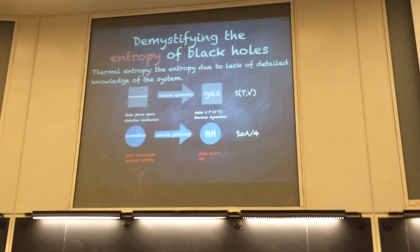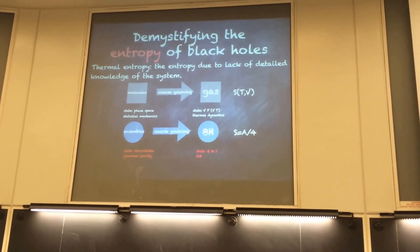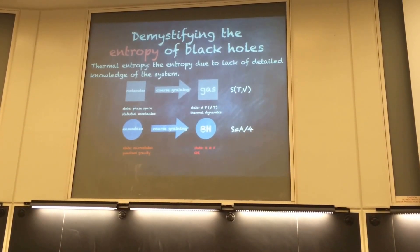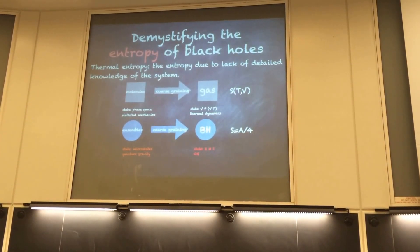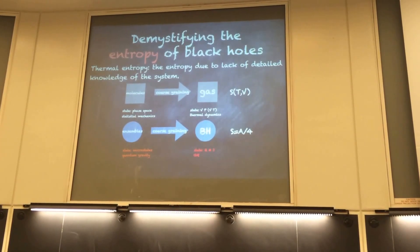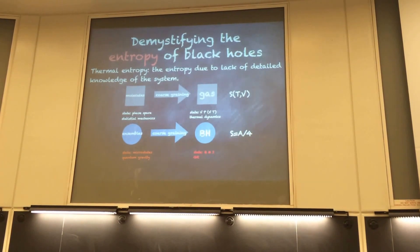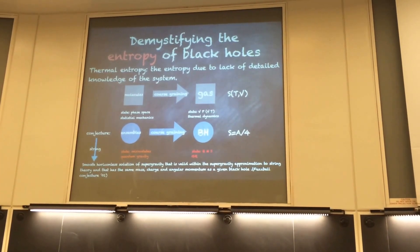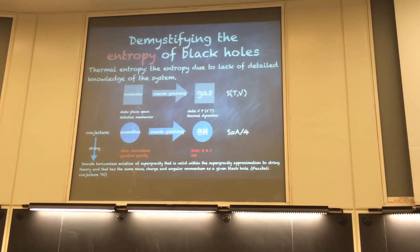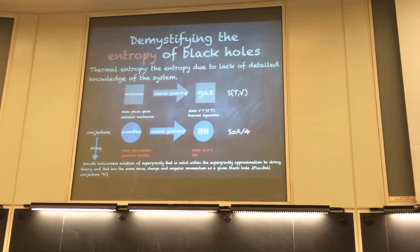Like the no-hair theorem: for black holes, we only have three parameters — the charge, the momentum, and the mass. But we guess — it's a conjecture — there are some ensemble of microstates of the black hole. When you look very far away, if you do the coarse-graining, you'll find this ensemble of microstates of the black hole. For different quantum gravity theories, we have different conjectures for what the ensembles are. In string theory, we have a conjecture called the fuzzball conjecture — we guess these ensembles are smooth solutions of supergravity.